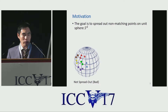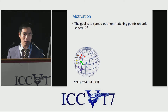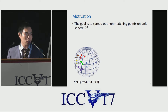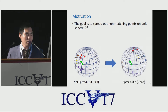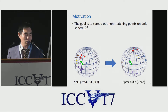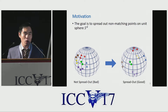Following previous research, we also consider learning a descriptor on a D-dimensional sphere, or learning an L2-normalized descriptor. Our idea is to try to spread out the non-matching points on the unit sphere. If the descriptor is not spread out enough — as seen in the figure on the left-hand side — we are not fully using the expressive power of the whole space.